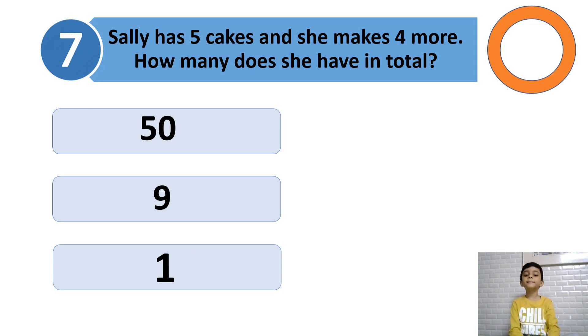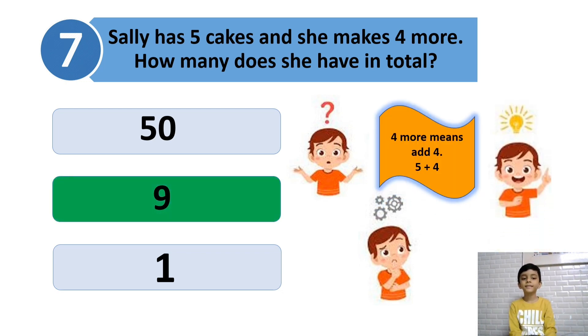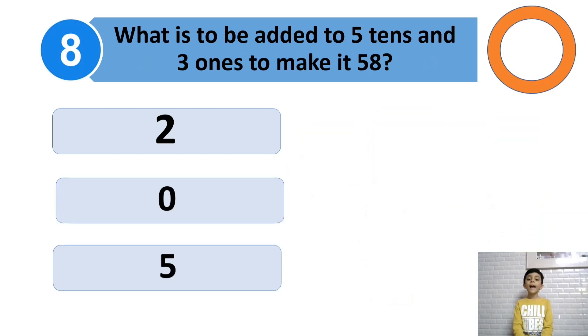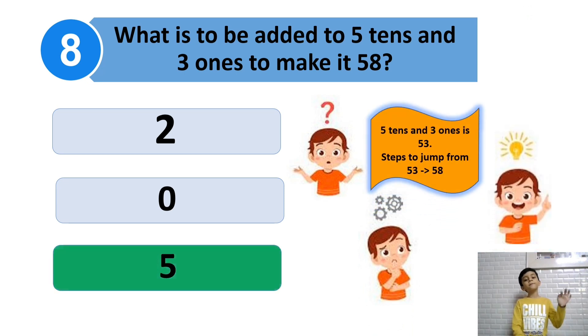What is to be added to 5 tens and 3 ones to make it 58? 5 tens and 3 ones is 53! Can you guess now? Yes! The answer is 5!